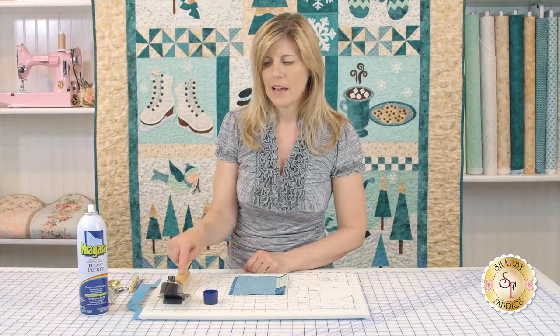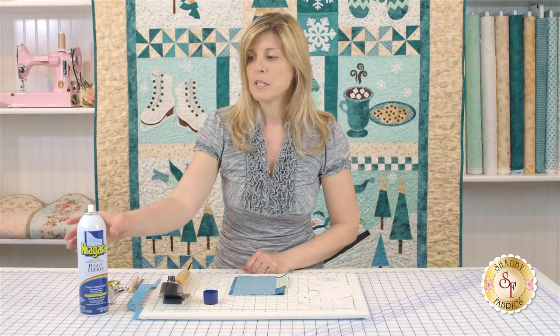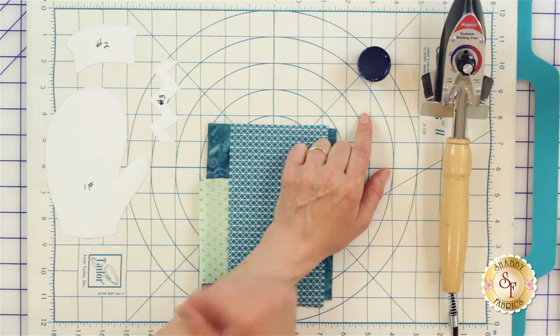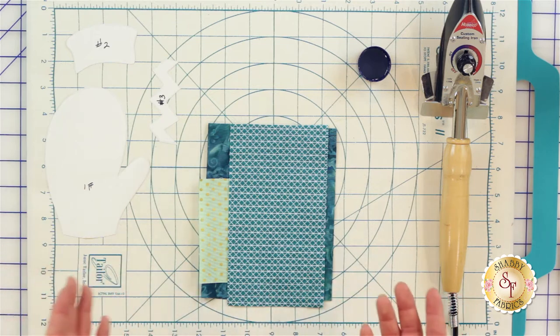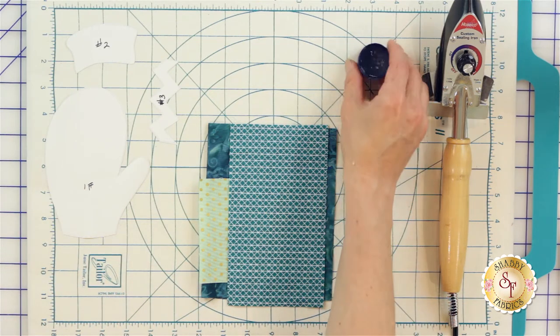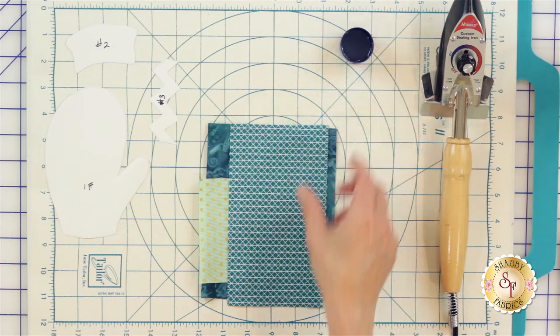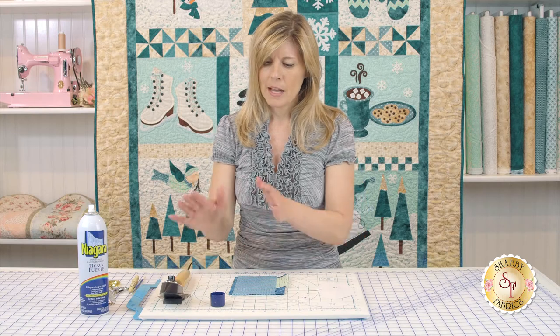When we get ready to start appliqueing, one thing I have all my students do is get that iron heating up and we spray some spray starch into the cap or a bowl, as you prefer. I did that before we got started, so it's in liquid form and ready to go. It doesn't take too long, just about five to ten minutes.